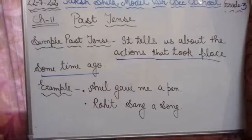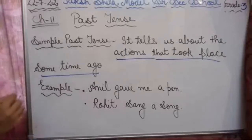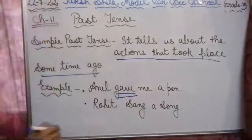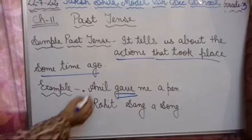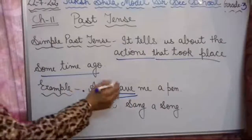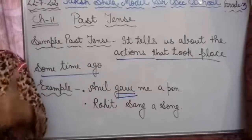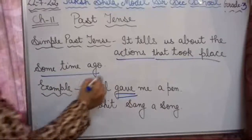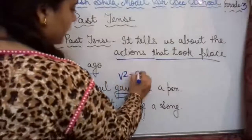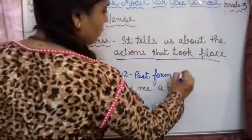For example: 'Anil gave me a pen.' How will you identify whether it is present tense or past tense? The main difference is that we will see the verb — we will check the forms of verbs. Here we have used the V2 form of the verb, which means the past form of the verb. V2 means past form of verb.